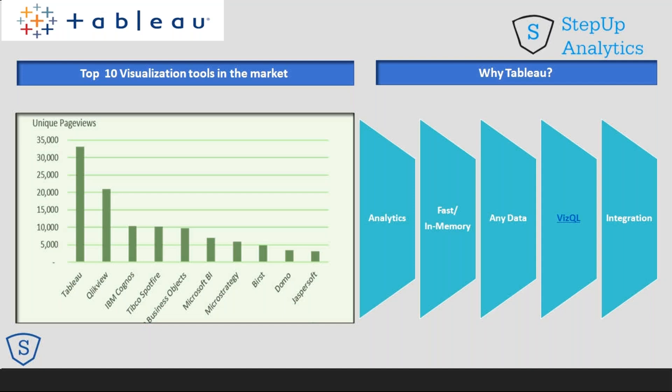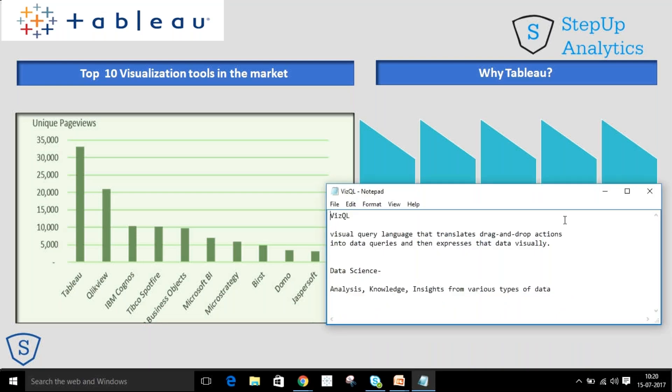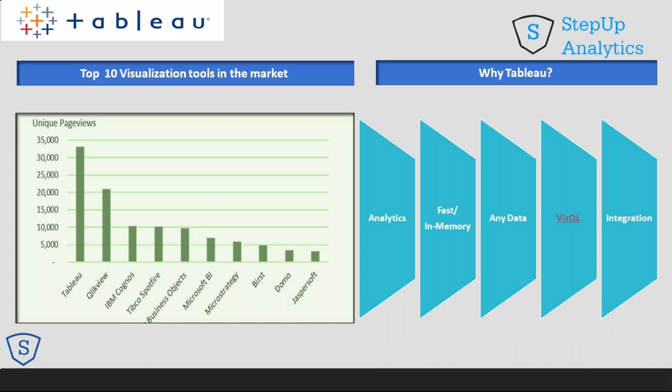Next one is VizQL. What is VizQL? VizQL is a visual image that translates drag-and-drop actions to data queries. It's a visual query language. Whatever you drag, automatically they have written queries accordingly in the background. Even if you are not from a technical background and don't know the technology or any language, you can go for Tableau, because Tableau writes its own visual query language — it's all drag-and-drop. Apart from calculations, no need to write anything.